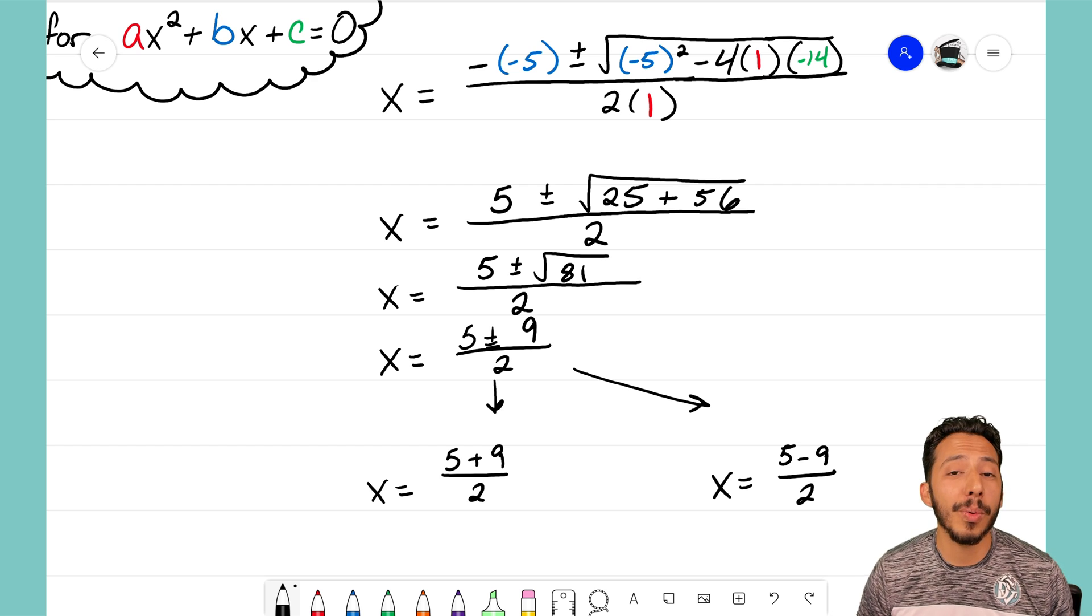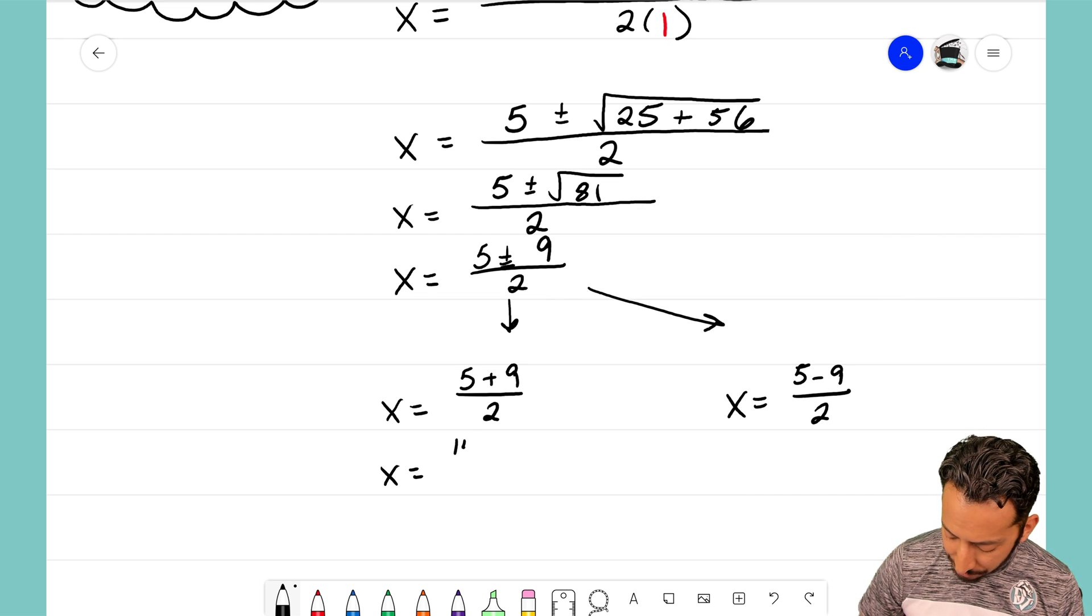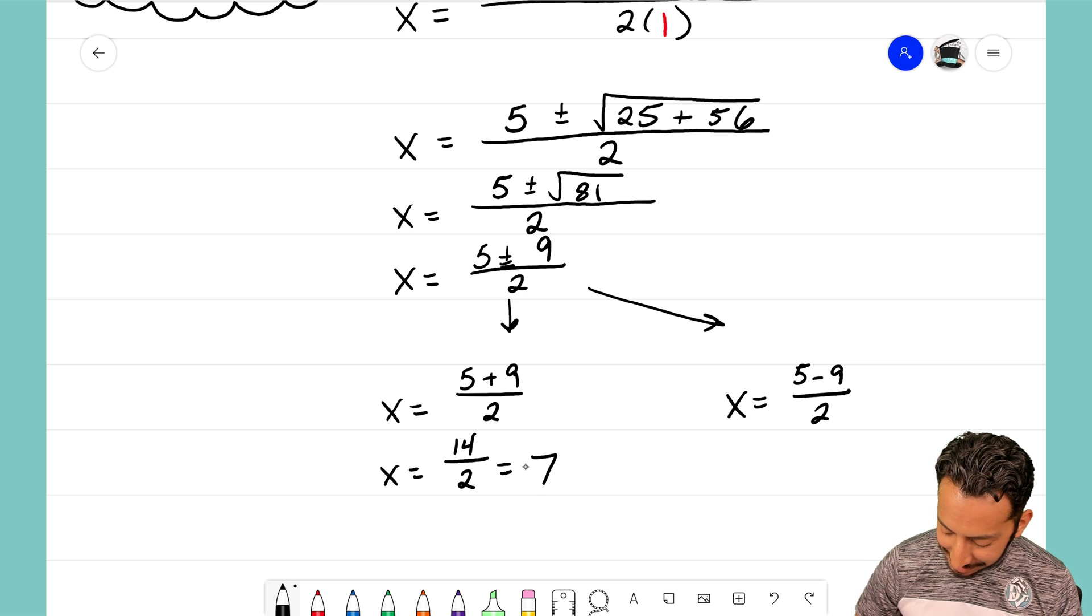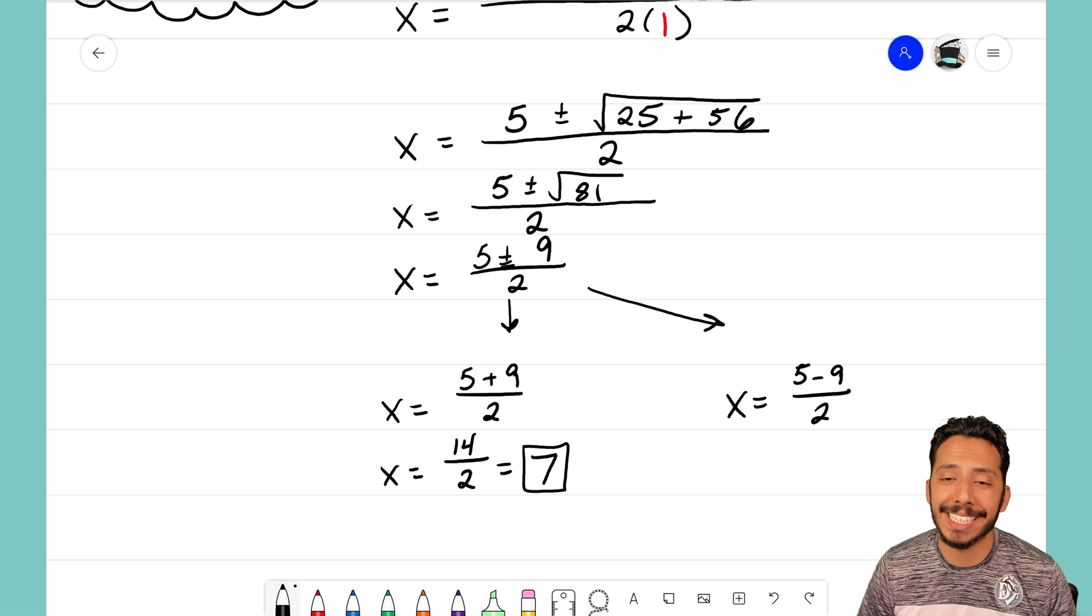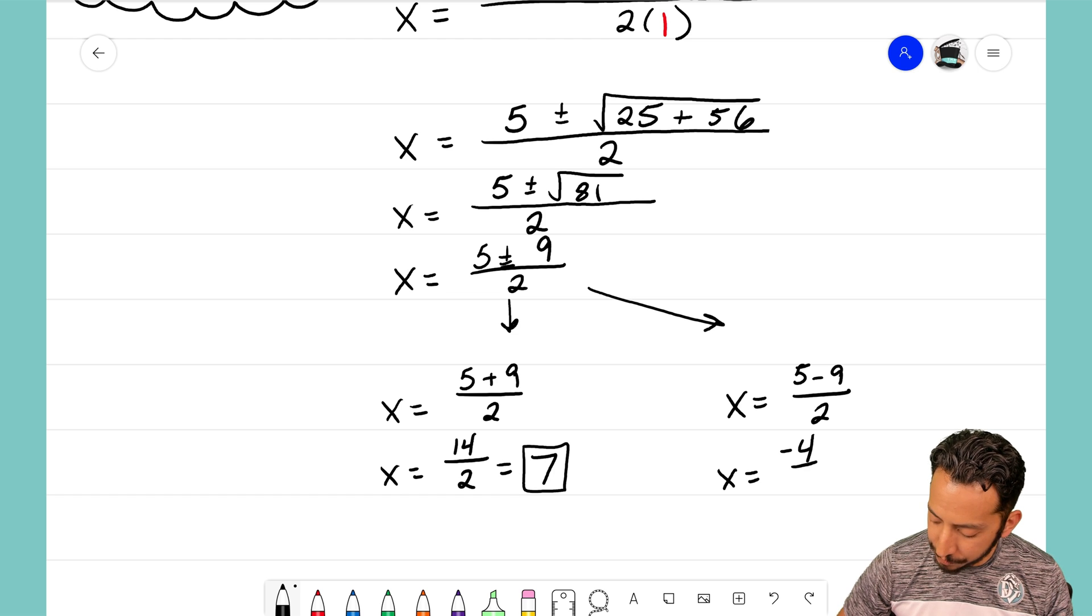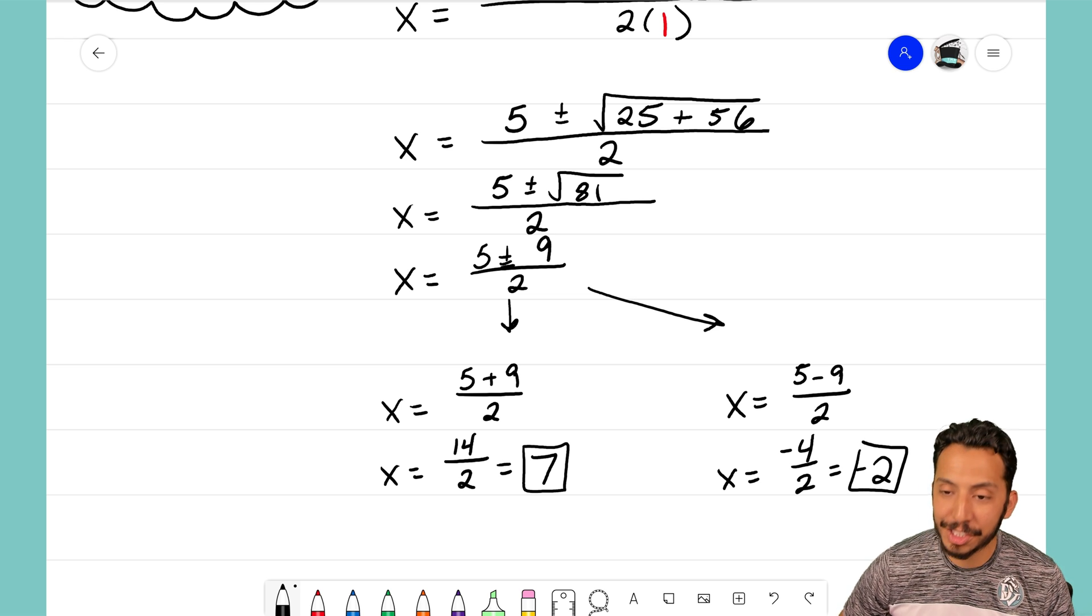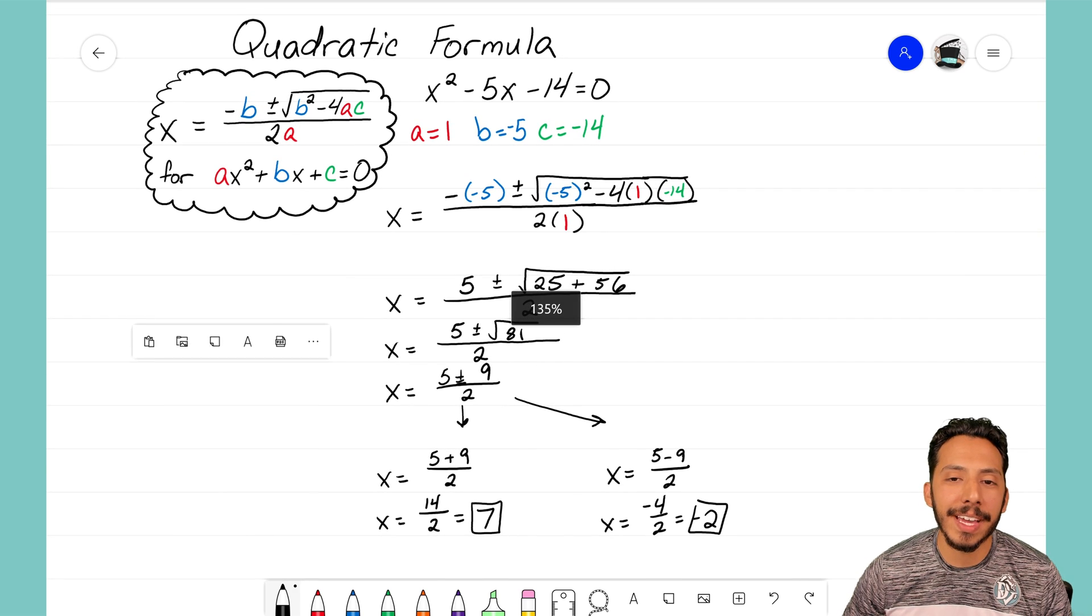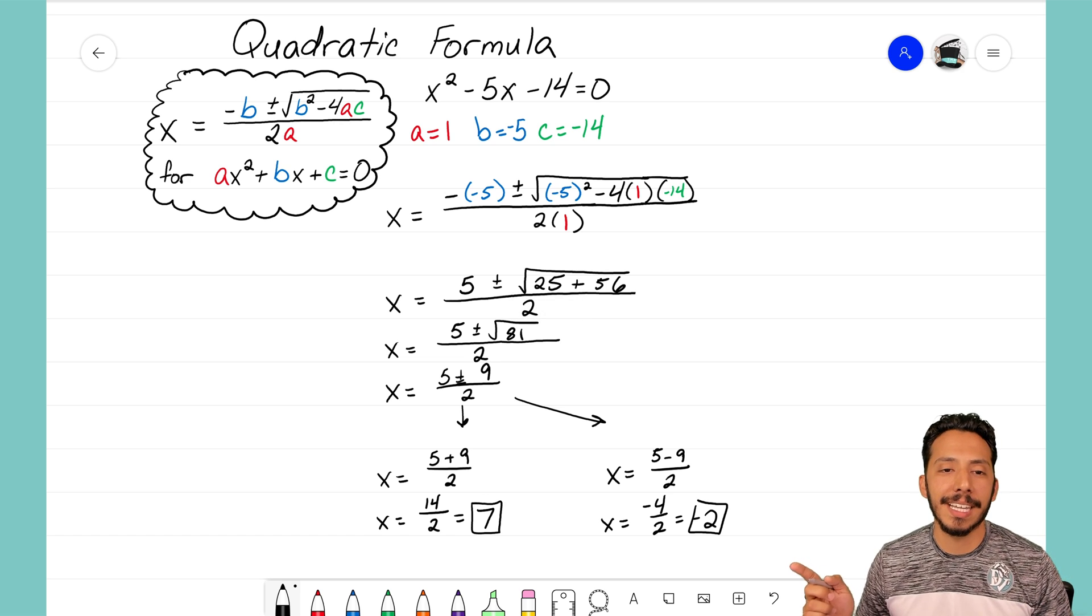Now I have two equations which look like I just need to add the numerators and then divide by the denominator. Let's start with the one on the left: 5 plus 9 is going to make the numerator 14 over 2, and 14 divided by 2 is 7. So I know that one of the x-intercepts for this quadratic equation is 7. I'll solve this last one over here: 5 minus 9 is going to create negative 4 over 2, and negative 4 divided by 2 simplifies to negative 2. So I know now that for this quadratic equation, x squared minus 5x minus 14, the two x-intercepts are positive 7 and negative 2.